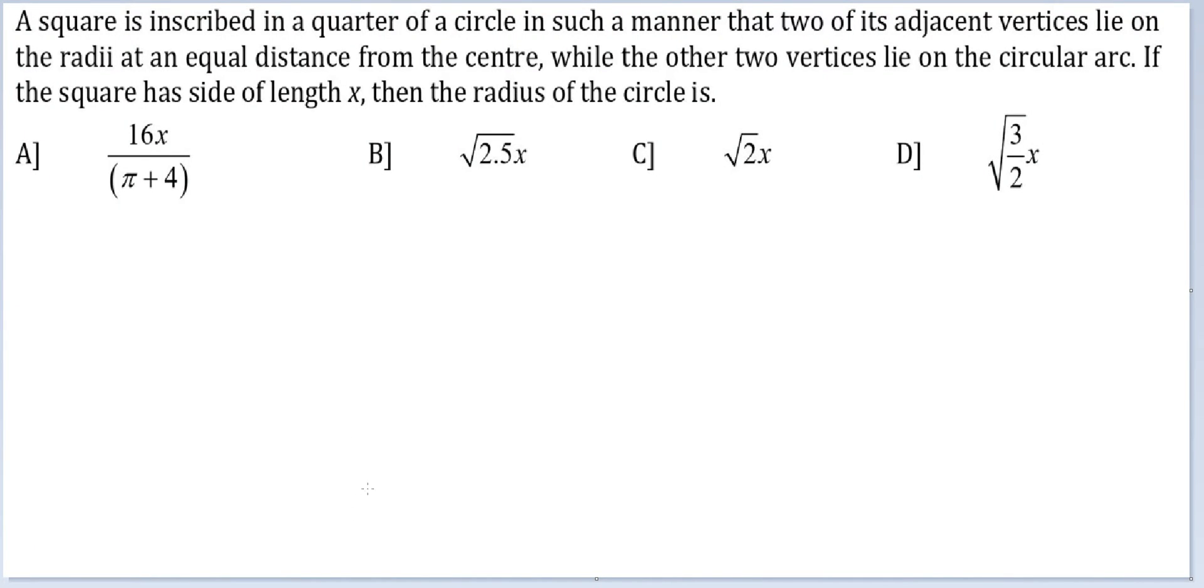Let's look at this question. A square is inscribed in a quarter of a circle in such a manner that two of its adjacent vertices lie on the radii at an equal distance from the center, while the other two vertices lie on the circular arc. If the square has side of length x, then find the radius of the circle.